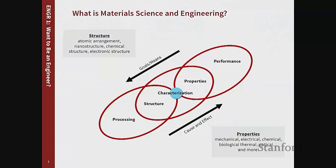What we really care about is understanding how the structure of the materials that we use all the time influences the properties that we care about. It turns out that the way individual atoms are arranged, or groups of atoms creating a nanostructure, or what the chemical structure or electronic structure of a material might be, dramatically influences how it performs mechanically, electrically, chemically, biologically, thermally, et cetera. And if we can tune what the structure of those materials are and characterize what that structure actually is, then we can set what its properties and ultimate performance might be.